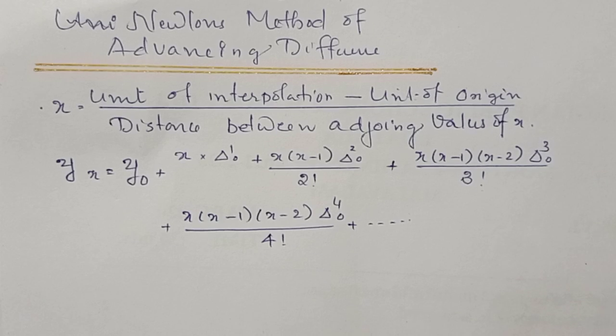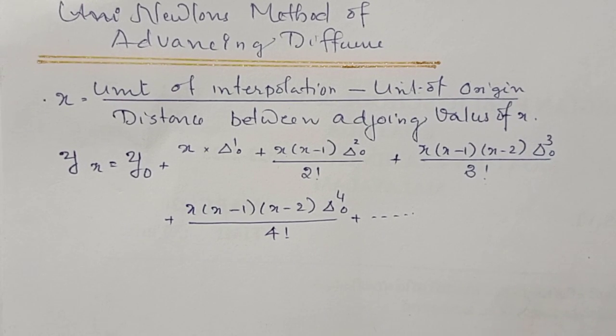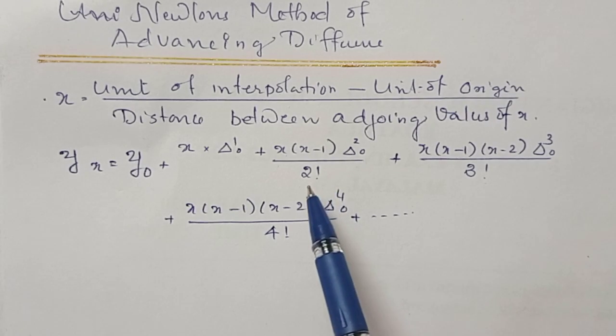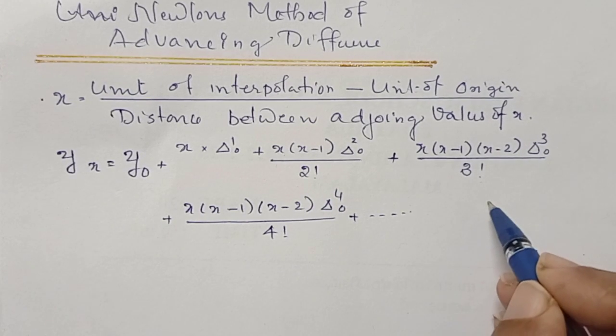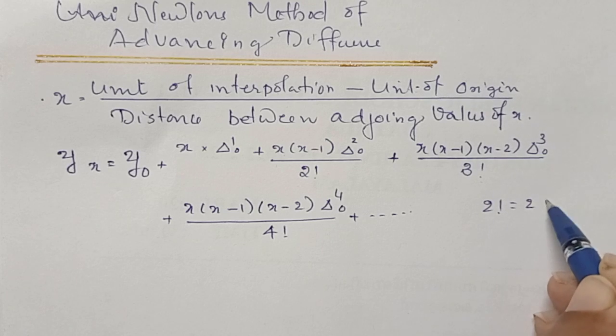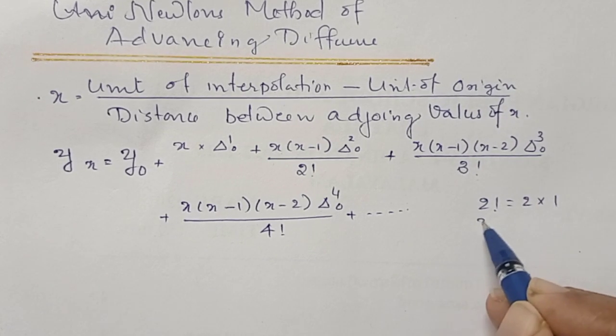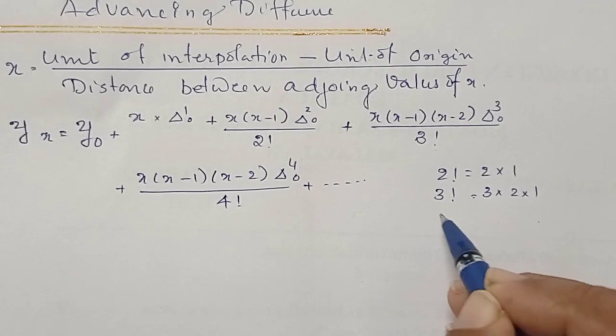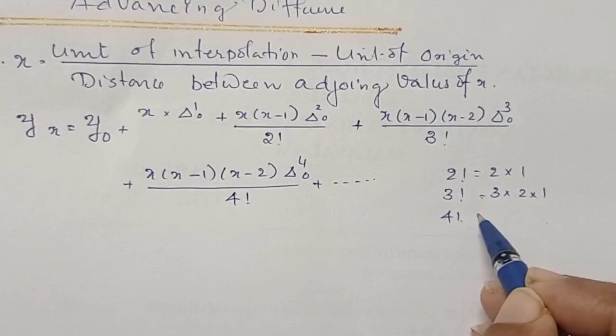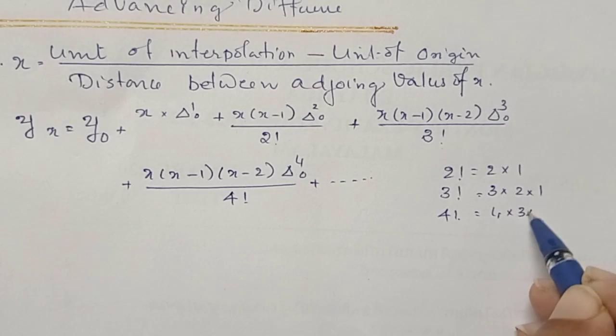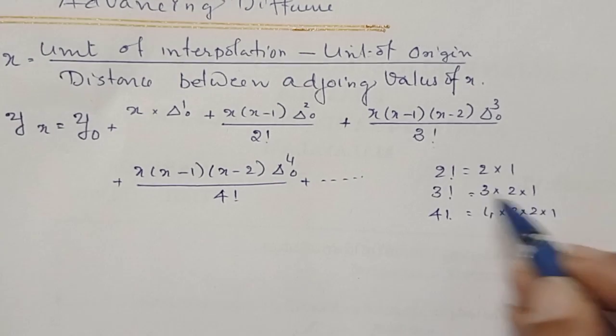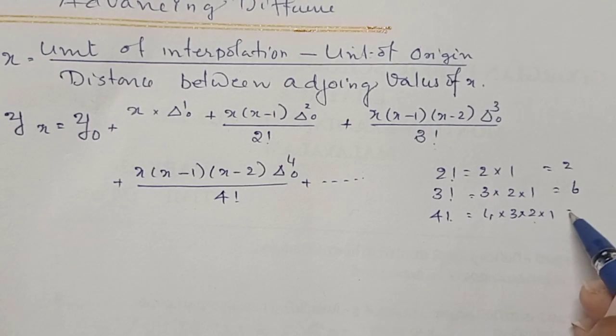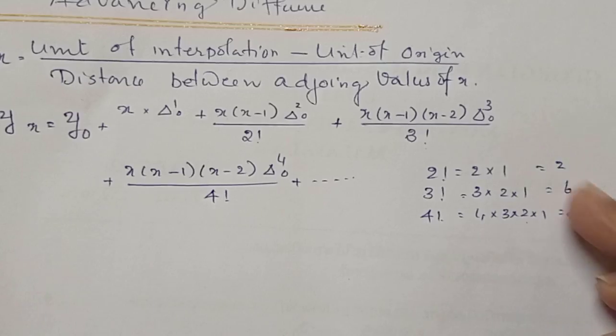It is very simple. What is 2 factorial? 2! equals 2 into 1. 3! is 3 into 2 into 1. 4! equals 4 into 3 into 2 into 1. If you multiply, you will get 2, 6, and 24 respectively. This is the answer.